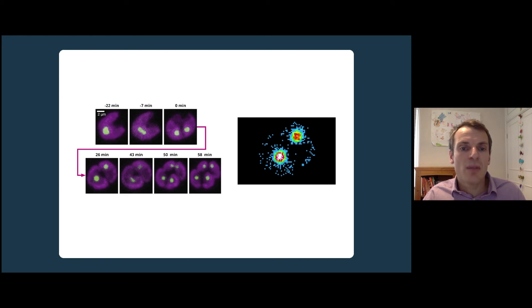Again, the pyrenoid is shown in green and the chloroplast in magenta. What we excitingly observed is that the pyrenoid splits via fission, but this fission was what you'd expect of a liquid-like droplet.